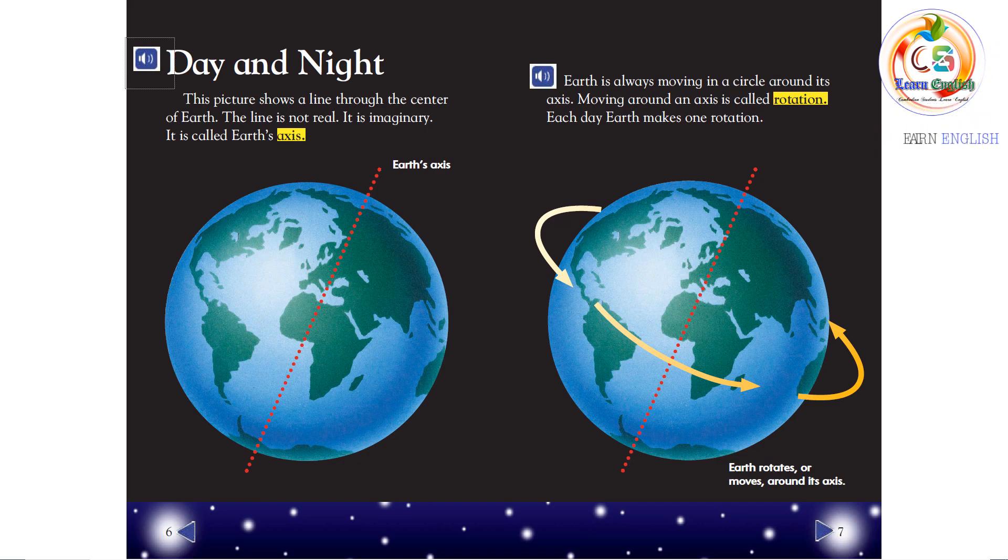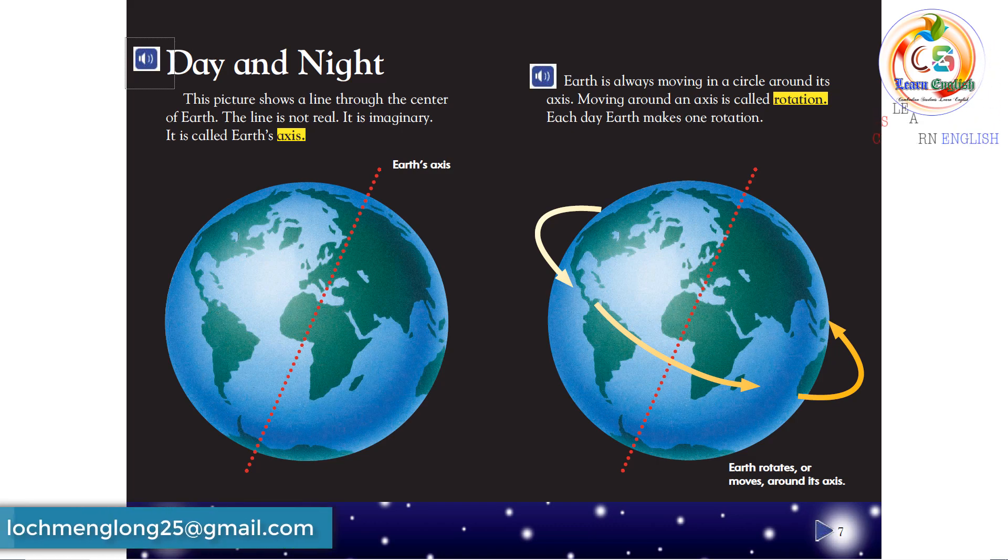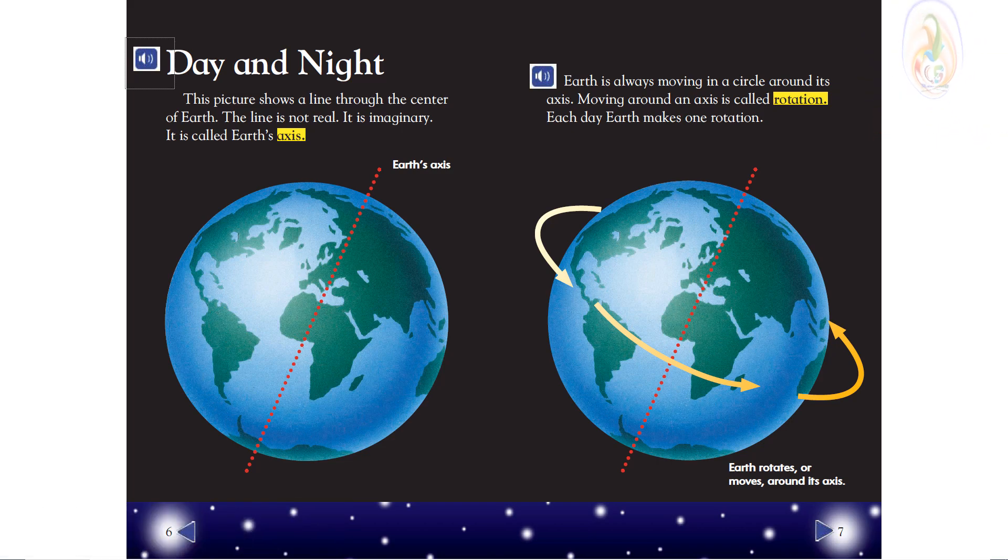Day and Night. This picture shows a line through the center of Earth. The line is not real. It is imaginary. It is called Earth's axis. Earth is always moving in a circle around its axis. Moving around an axis is called rotation. Each day, Earth makes one rotation.